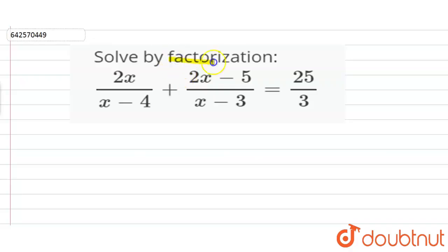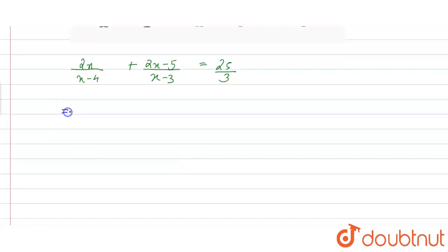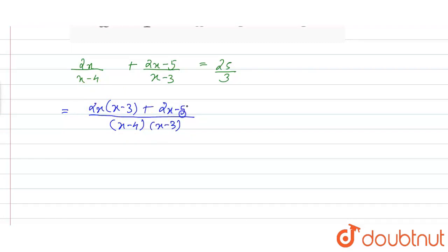We have to solve by factorization method. The equation is 2x upon (x minus 4) plus (2x minus 5) upon (x minus 3). Taking LCM, we have (x minus 4) into (x minus 3) in the denominator, with 2x into (x minus 3) plus (2x minus 5) into (x minus 4) equal to 25 by 3.